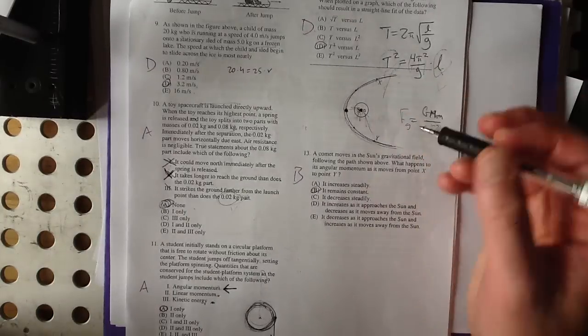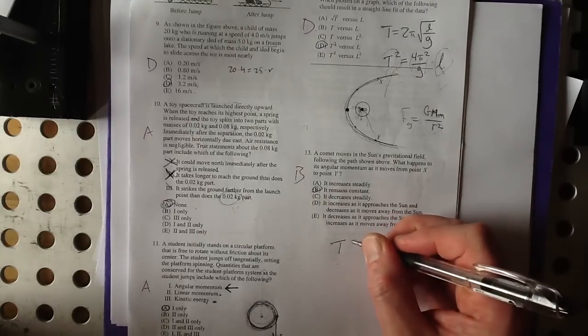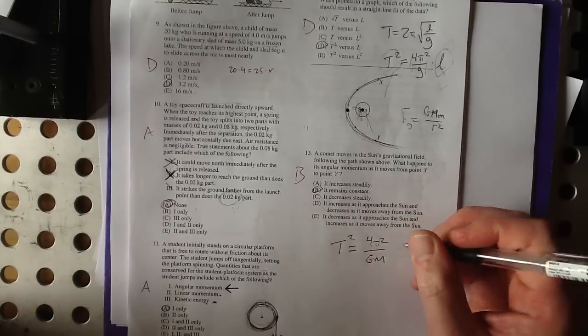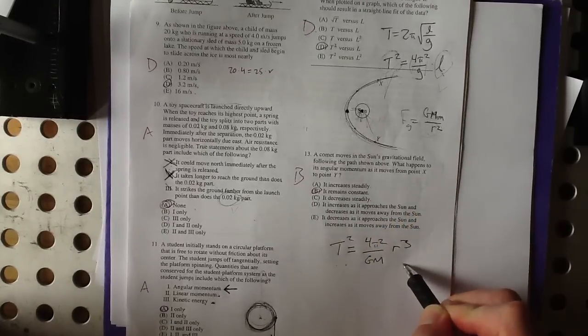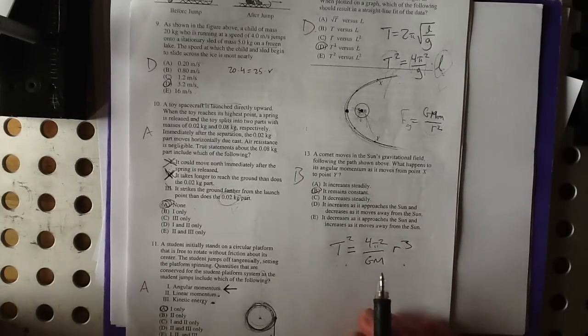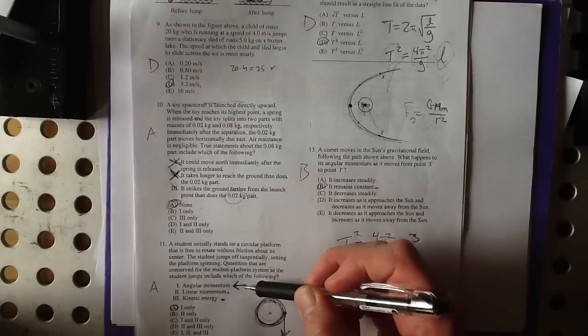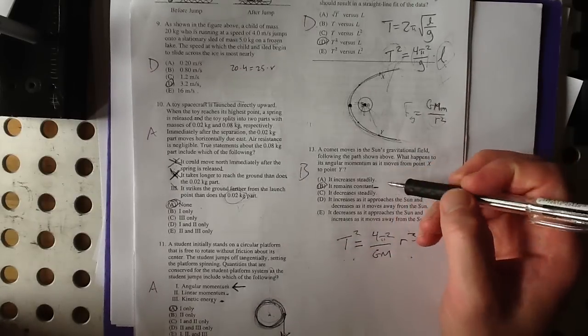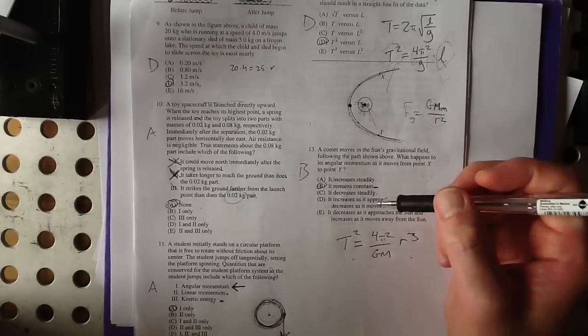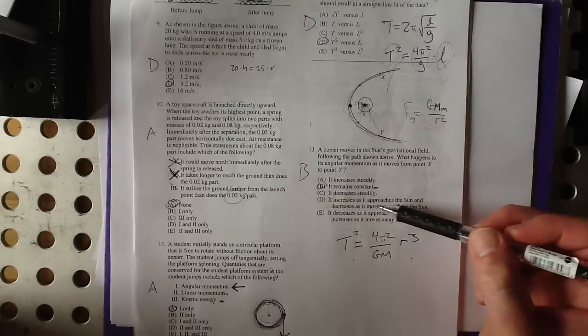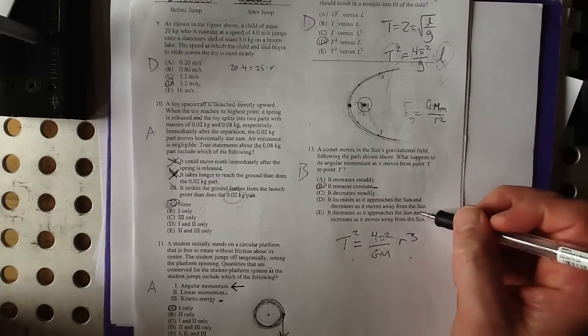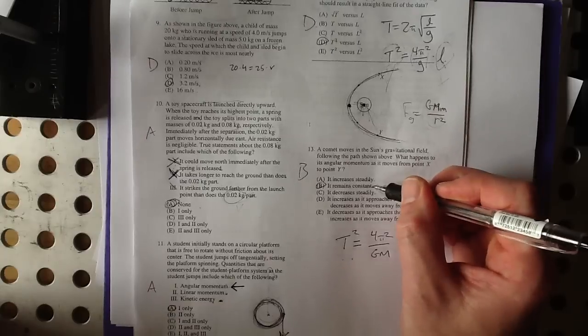Well, the whole Kepler's third law, that period squared is equal to 4π squared over gm times r cubed. That is a consequence of the fact that angular momentum is always conserved. This comes from that. So it remains constant, right? Just like in problem number 11, angular momentum is conserved. It does not increase. The velocity does. It doesn't decrease. It increases as it approaches the sun. No, that's not true. It's always conserved. This would be true of the force or the acceleration, and this would be true of the velocity. So the angular momentum is constant.